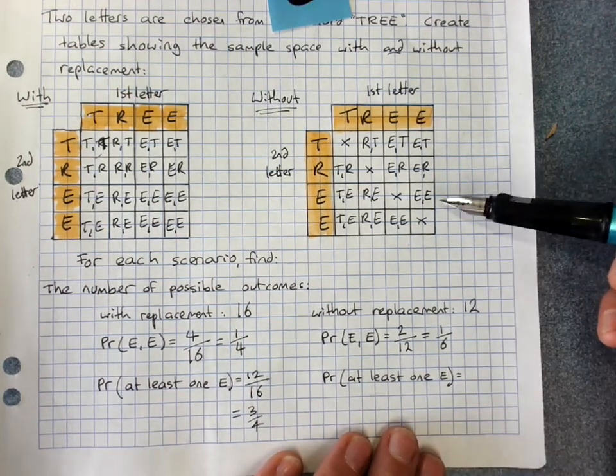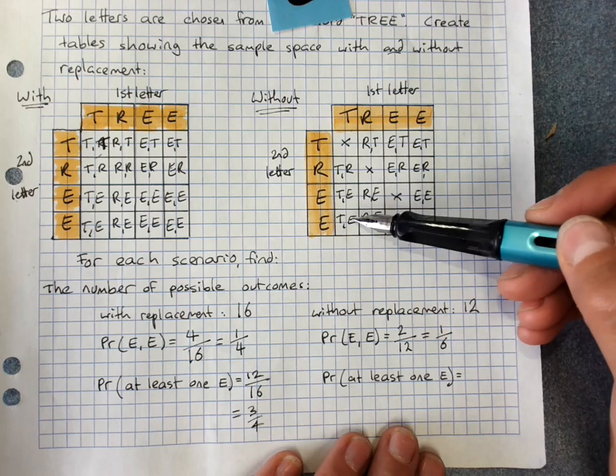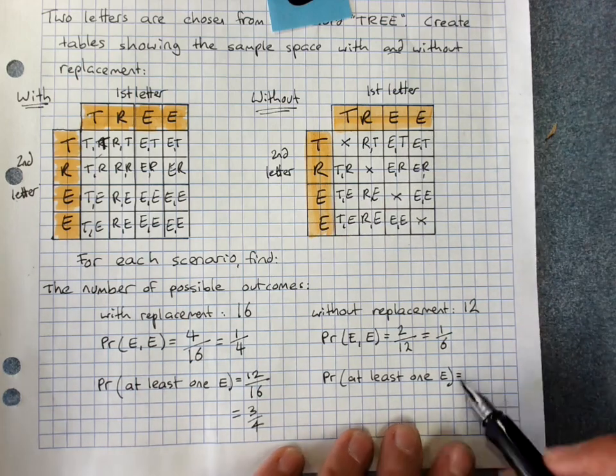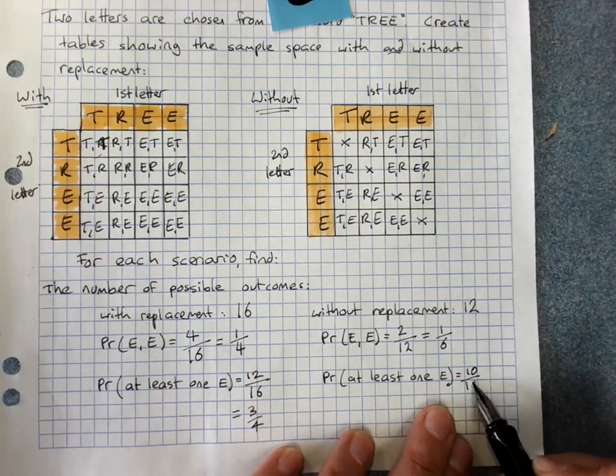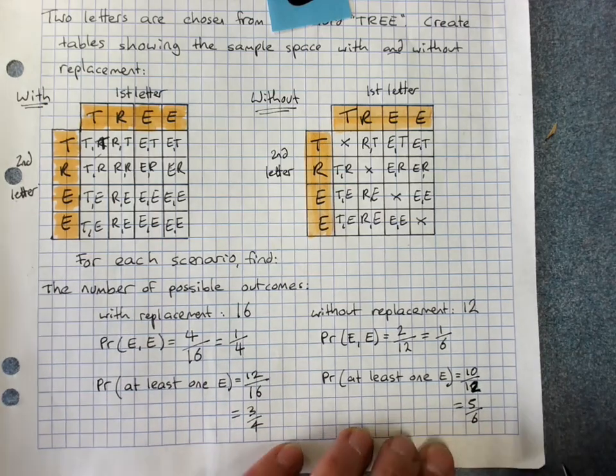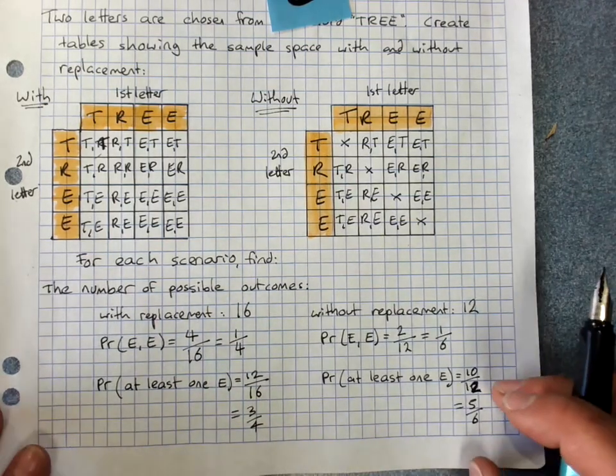Probability of at least one E here. 1, 2, 3, 4, 5, 6, 7, 8, 9, 10. 10 out of 12. Simplifying that down to 5 over 6. Always leave in simplified form.